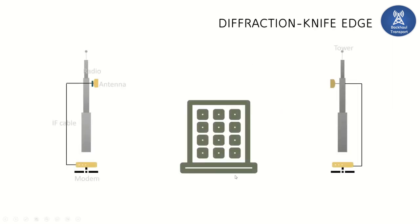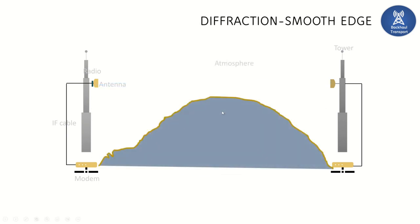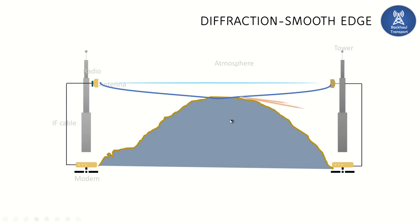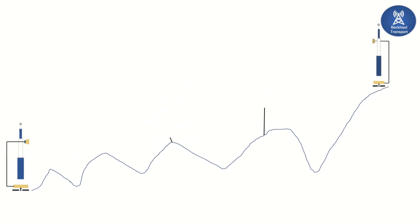In the real world, knife-edge diffraction occurs when a signal gets diffracted at the sharp edge of a building, creating shadow losses. The other case is smooth-edge diffraction, where the signal grazes over a smooth surface, also producing shadow losses.